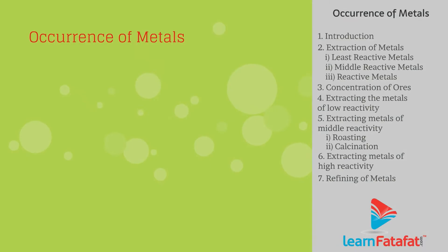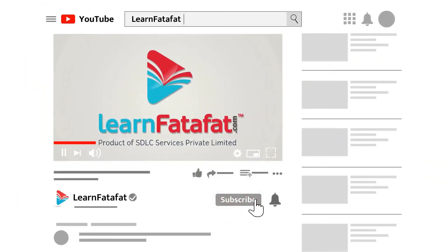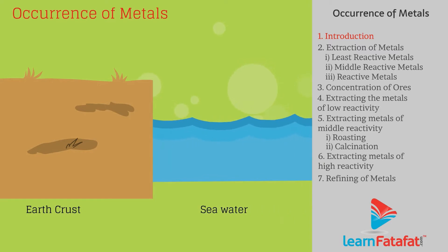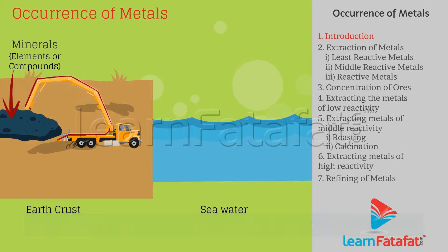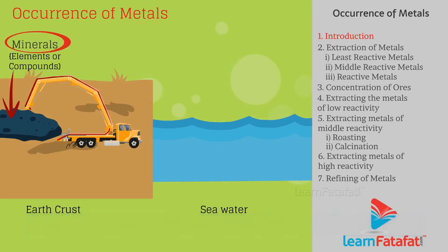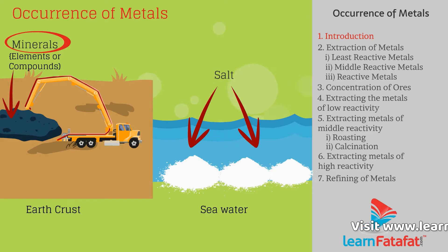Occurrence of Metals. Major sources of metals are earth crust and sea water. Metals obtained from earth crust are in the form of elements or compounds called as minerals. Some metals occur as soluble salts in sea water.